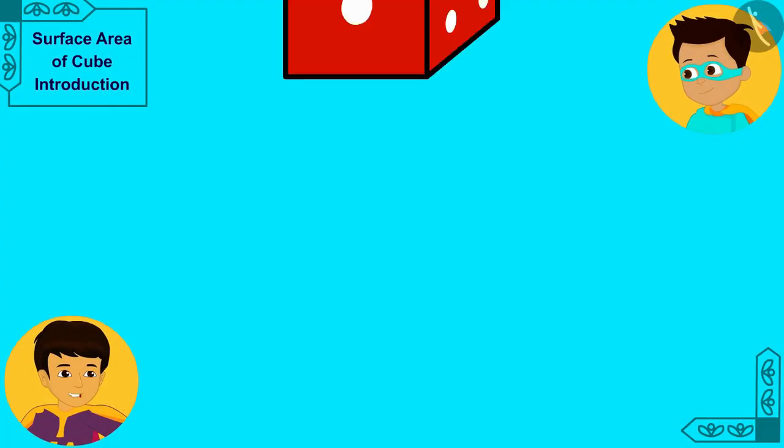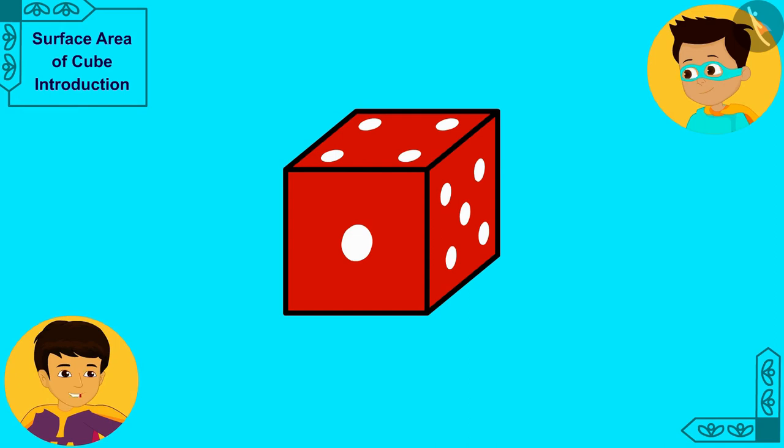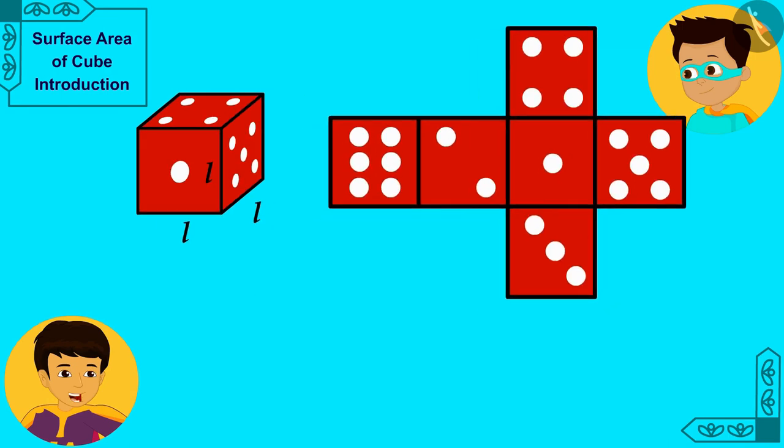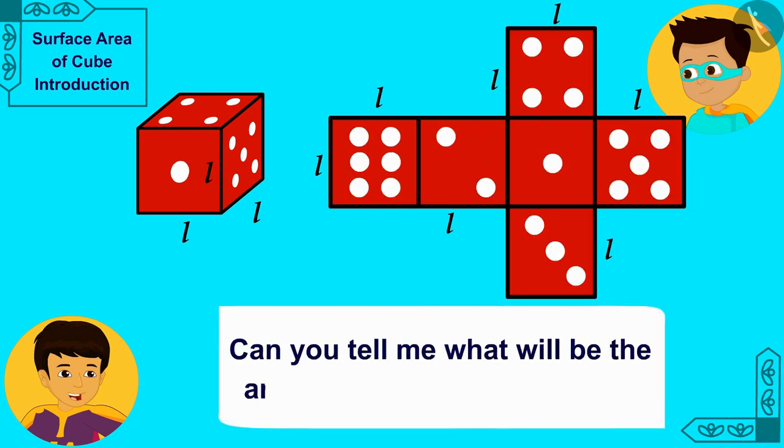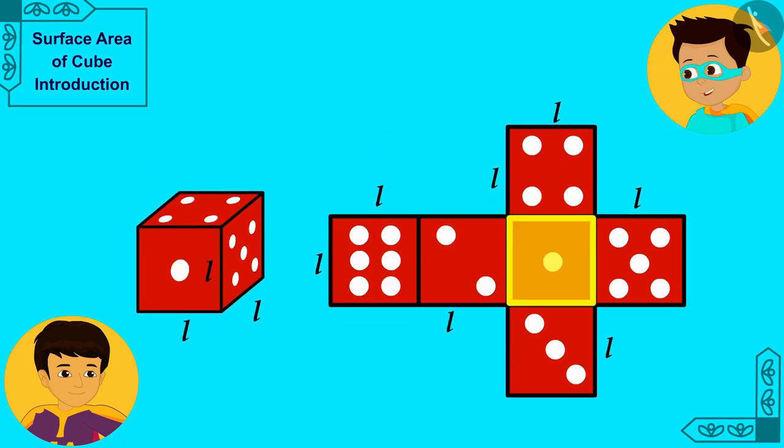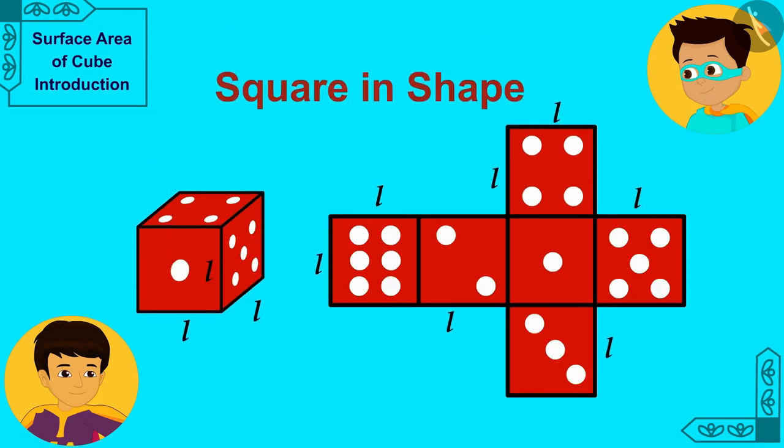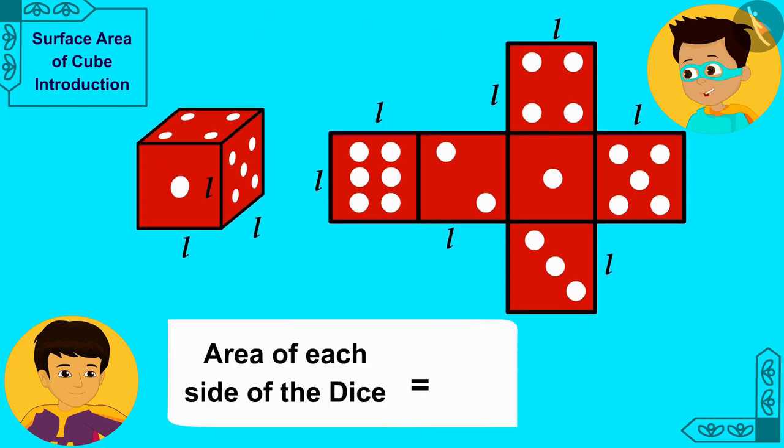Suppose, the length of each side of this dice is L. If we open this cube shaped dice and flatten it, its shape of a net will be formed and it will look something like this. Can you tell me what will be the area of each side? Each side of a cube shaped dice is square in shape. Therefore, its area will be L times L or L squared.